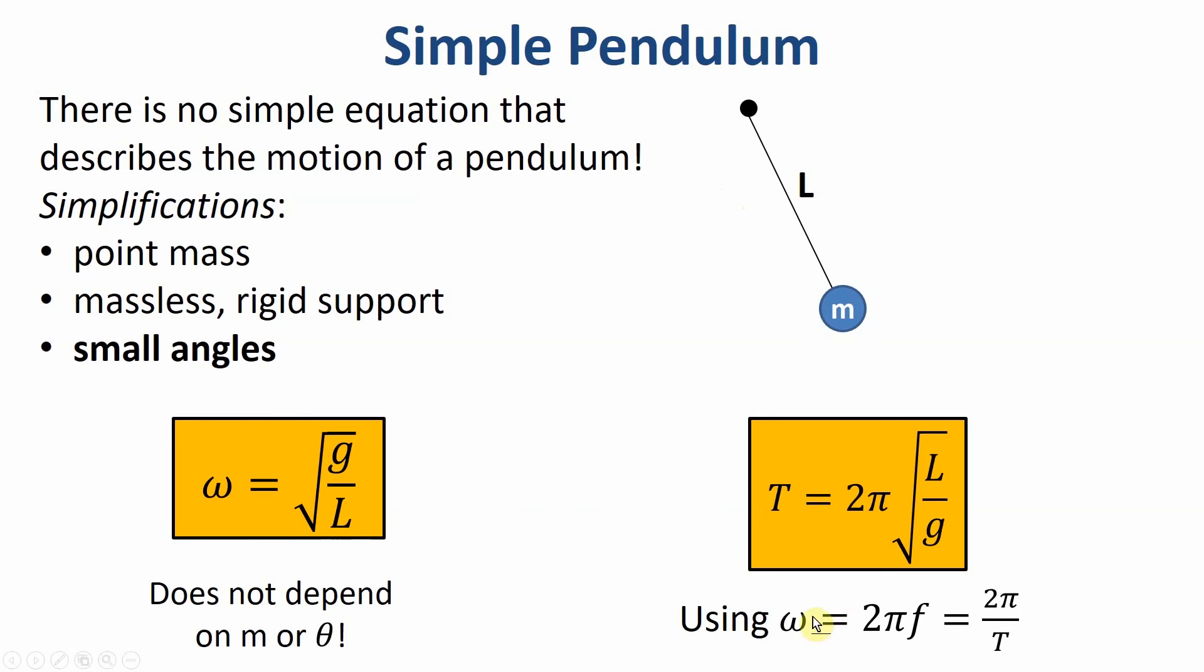Using that omega is 2 pi f or 2 pi over T, I can find the period for one oscillation just by doing a little bit of algebra so we can calculate how long it would take. This is the equation you'd use to build a clock or to measure gravity on some planet.